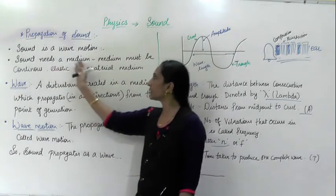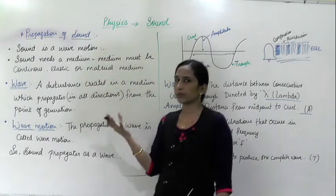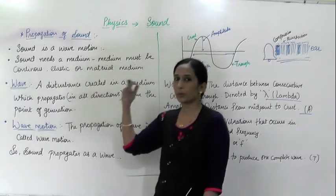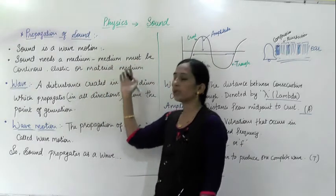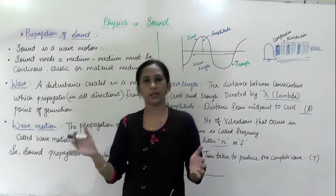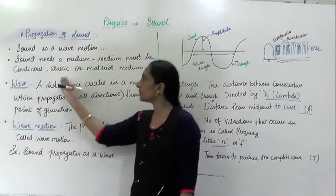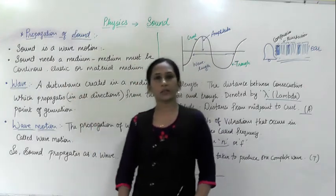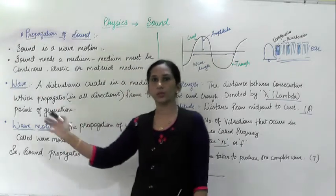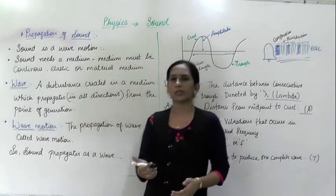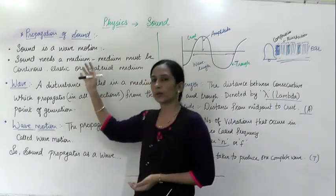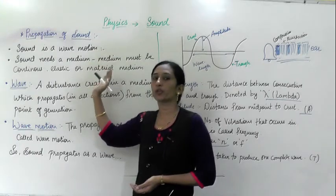Sound needs a medium. A medium is any substance or material needed for propagation. The medium should be continuous, like air which is everywhere. It should also be elastic, meaning the molecules should be able to move so that vibrations can pass through each other. It should be a material medium — solid, liquid, or gas — any kind of material is needed for the propagation of sound.